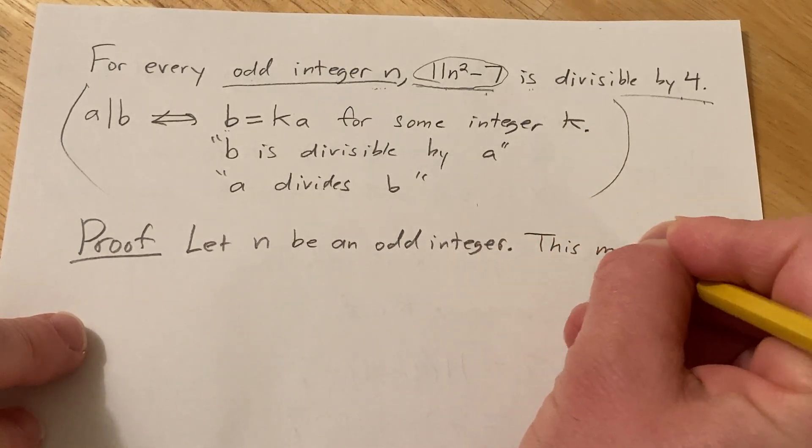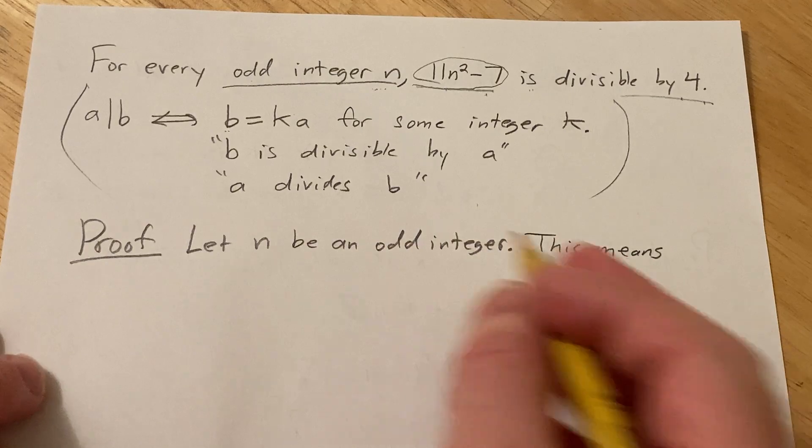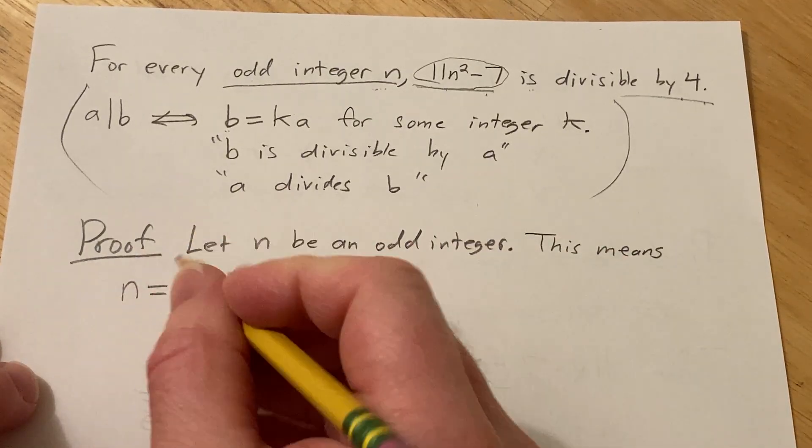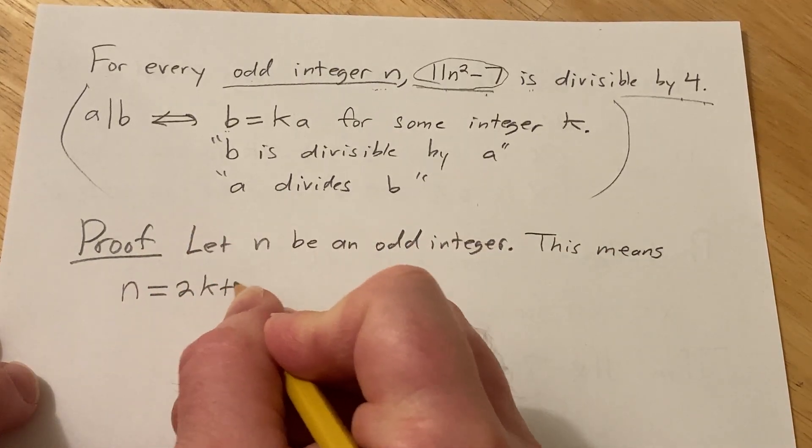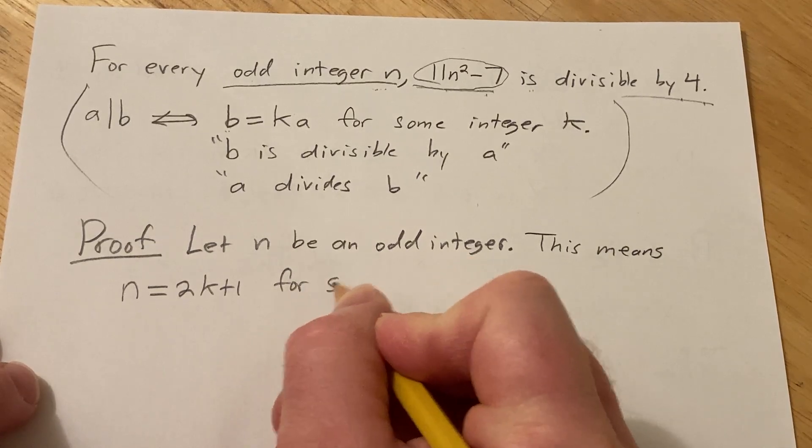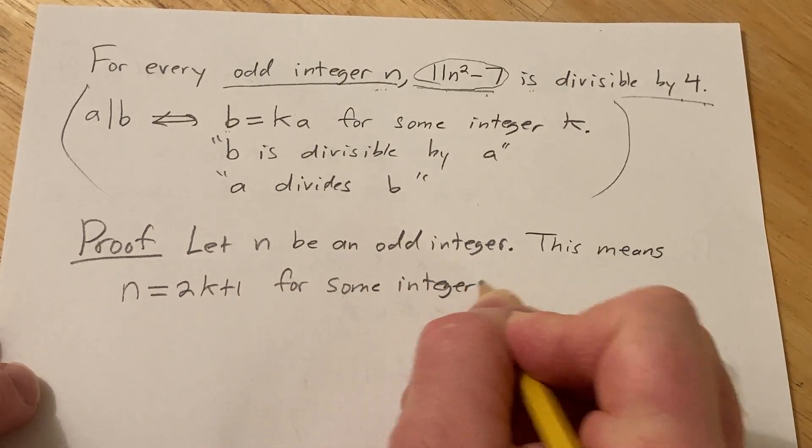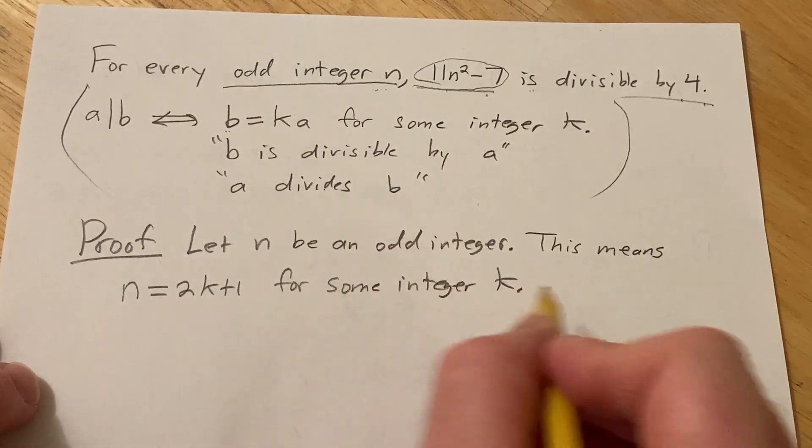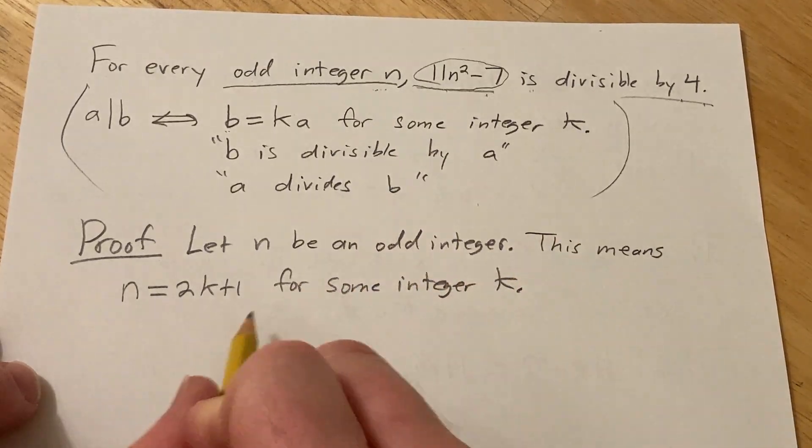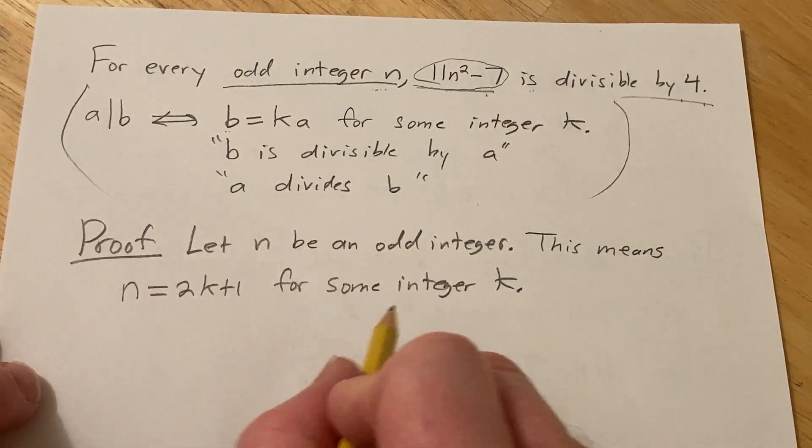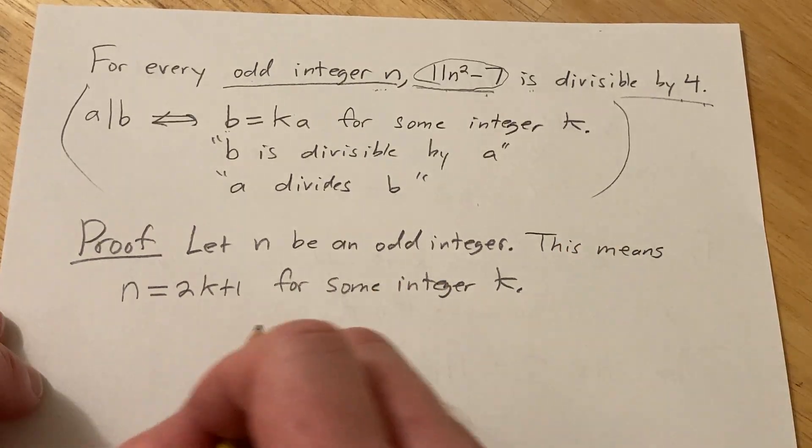So this means, recall that when n is odd, that means we can write it as 2k + 1 for some integer k. So this is the definition of odd. So if n is odd, that's what it means, right? You can write it as n = 2k + 1 for some integer k.